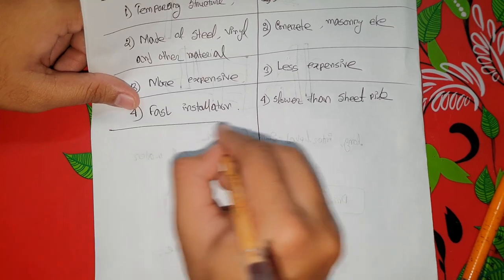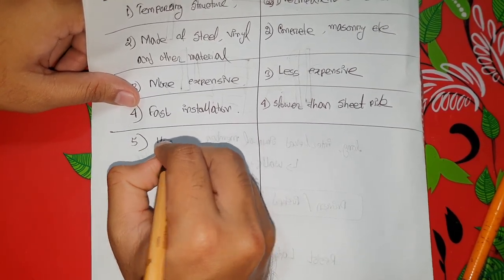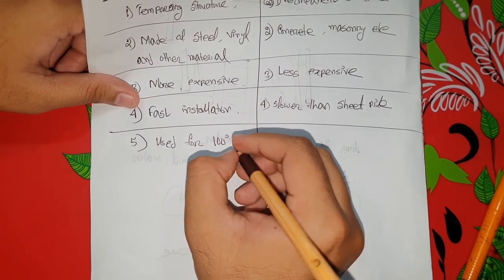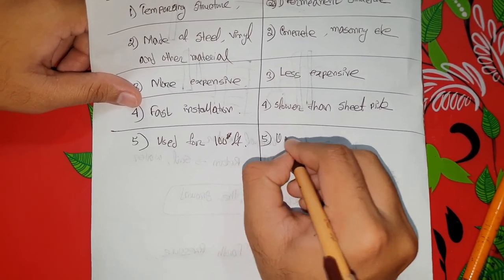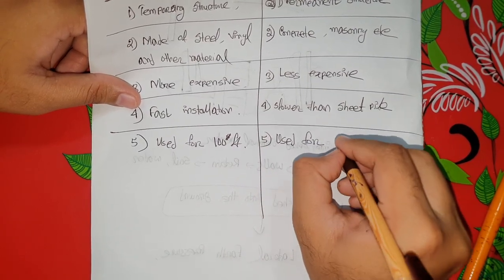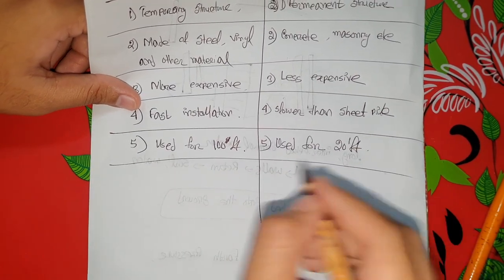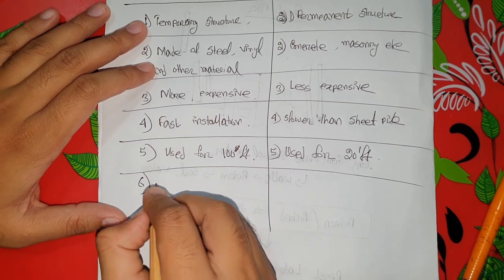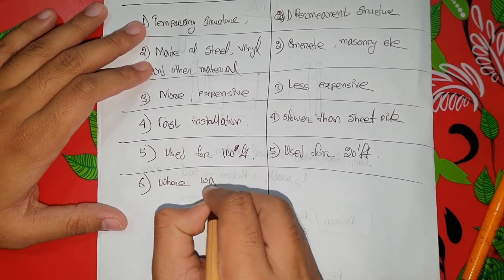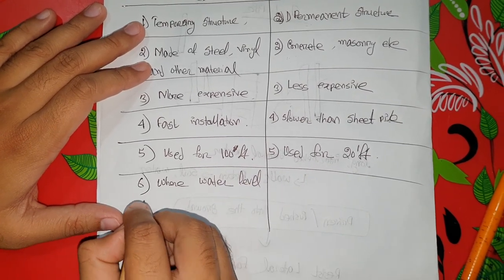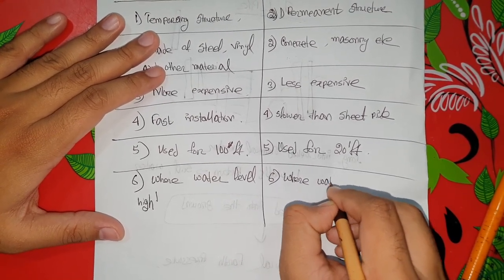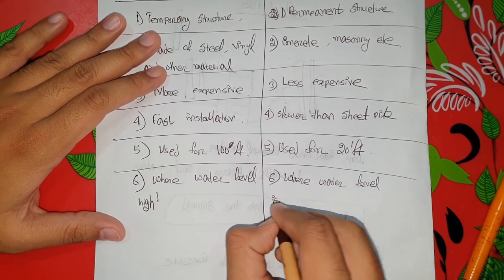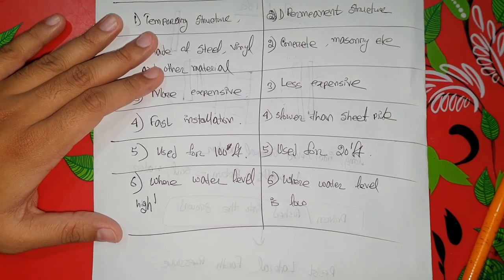This is the last point: the retaining wall is mostly used for depths up to 100 feet, while the sheet pile is used for around 20 feet. This is the water level. So that is this video — this is the introduction. In the next video, we will see the net diagram.